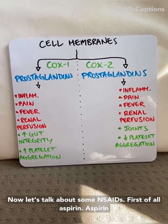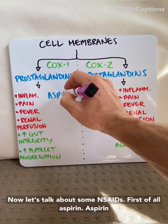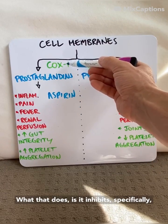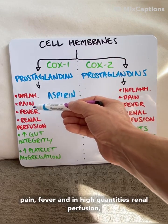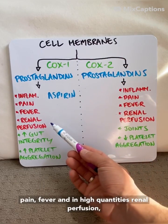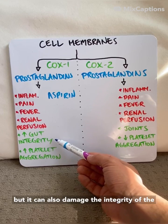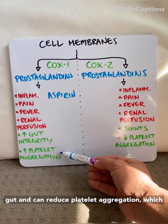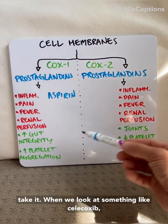Now let's talk about some NSAIDs. First of all, aspirin. Aspirin inhibits specifically COX-1 — stops inflammation, pain, fever, renal perfusion — but it also can damage the integrity of the gut and can reduce platelet aggregation, which is one of the reasons why individuals with cardiovascular risk take it.